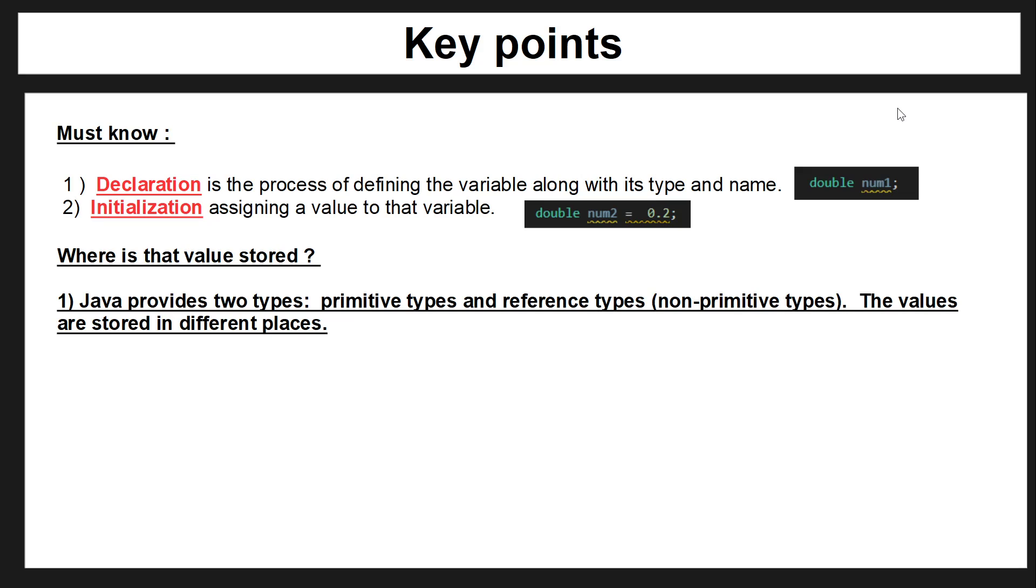In Java there are two types of values: a primitive type and a reference type. These values are stored in different places and so they have different behaviors. In this video we're going to be talking about primitive types.